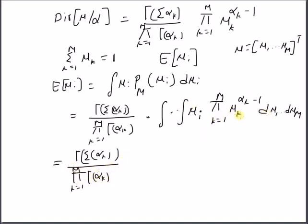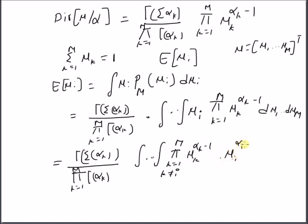This integral is a rearranged form of the Dirichlet distribution with one of the alphas equal to alpha_i plus 1. We can rewrite it as the product k=1 to m (with k not equal to i) of mu_k to the alpha_k minus 1, multiplied by mu_i to the power alpha_i plus 1 minus 1. This now looks like a new Dirichlet distribution.